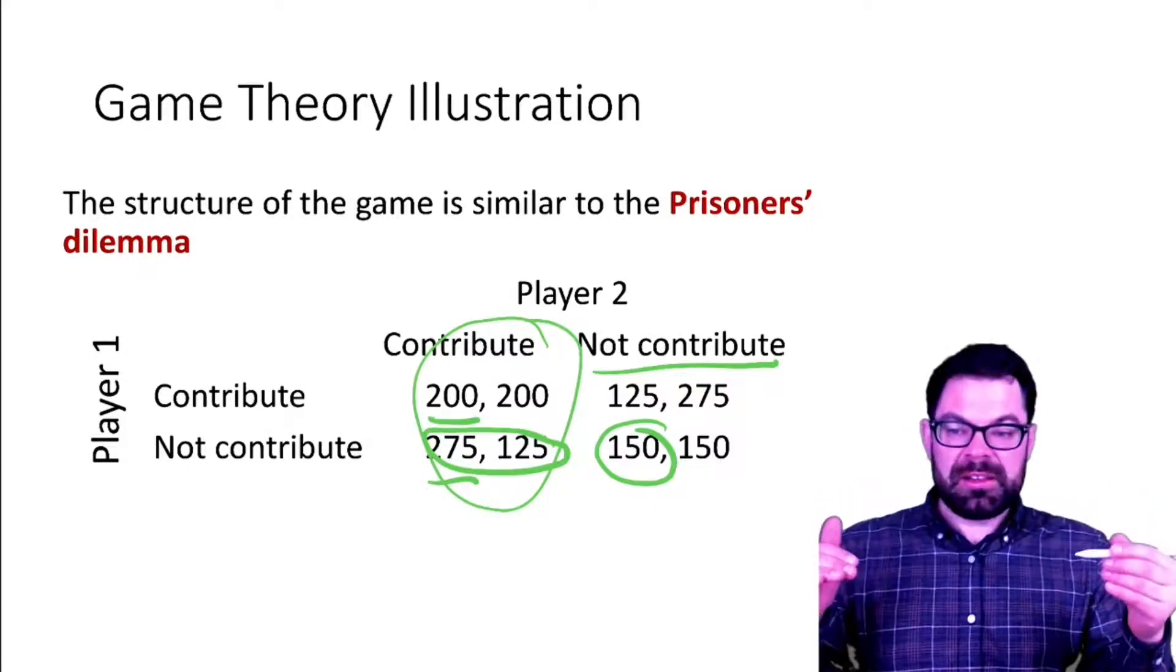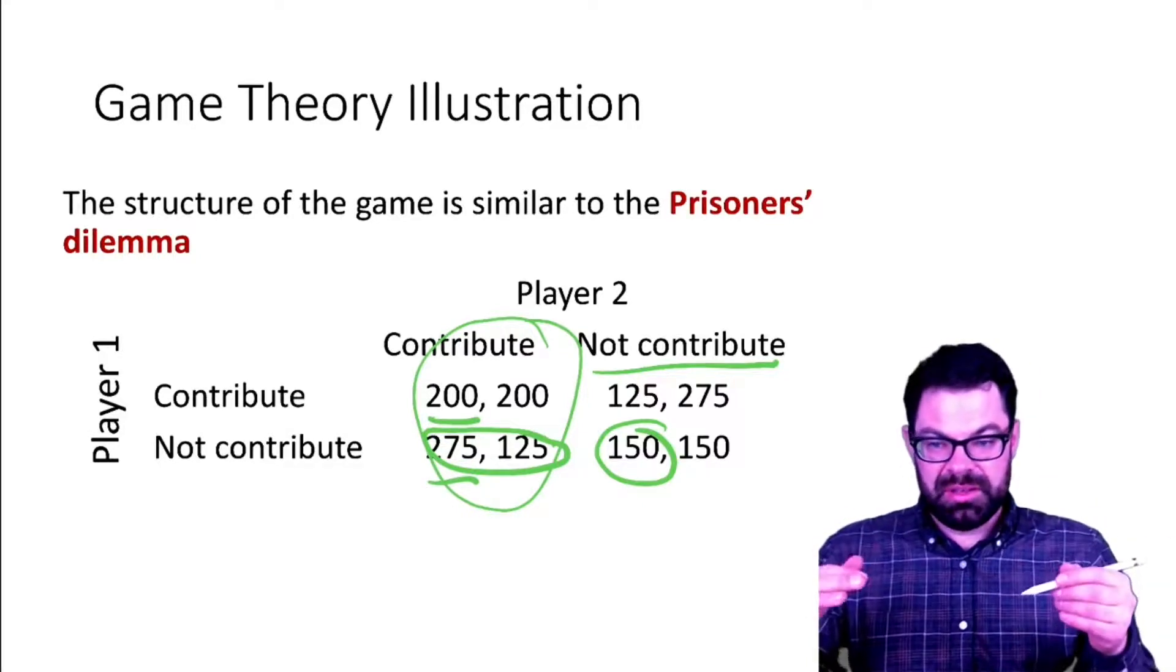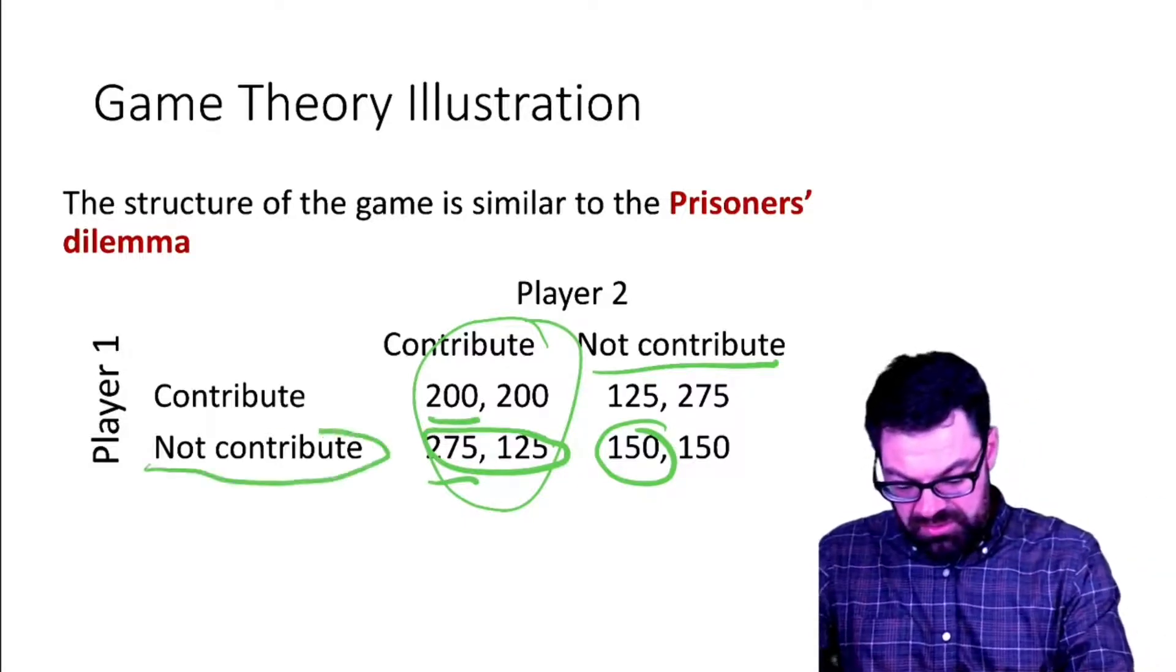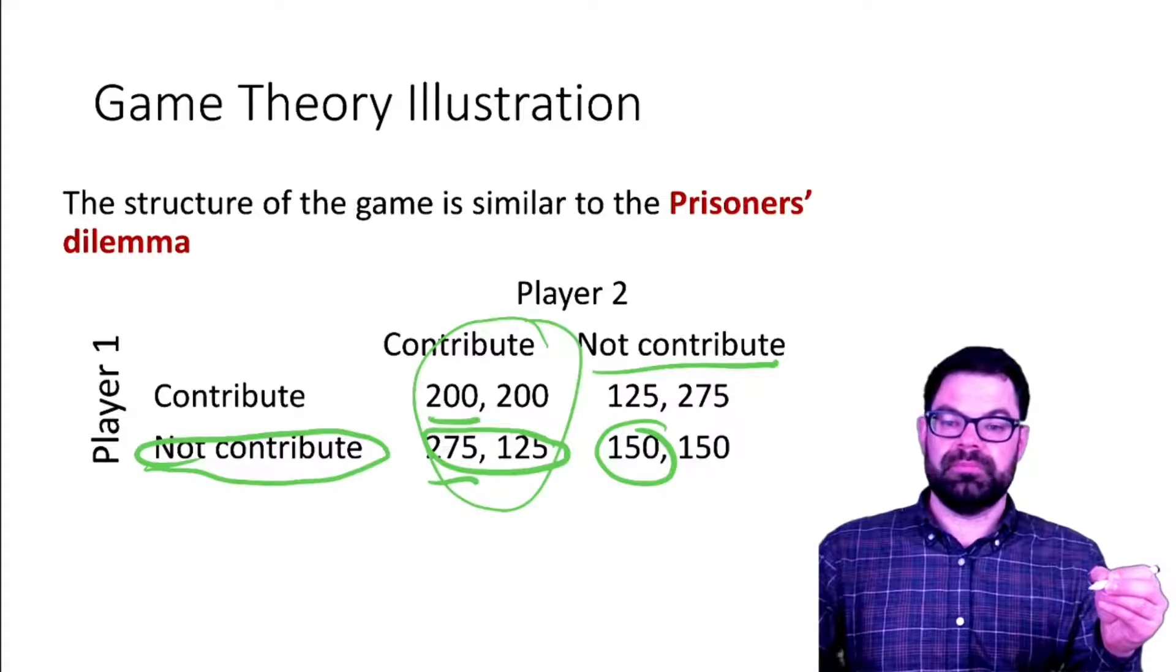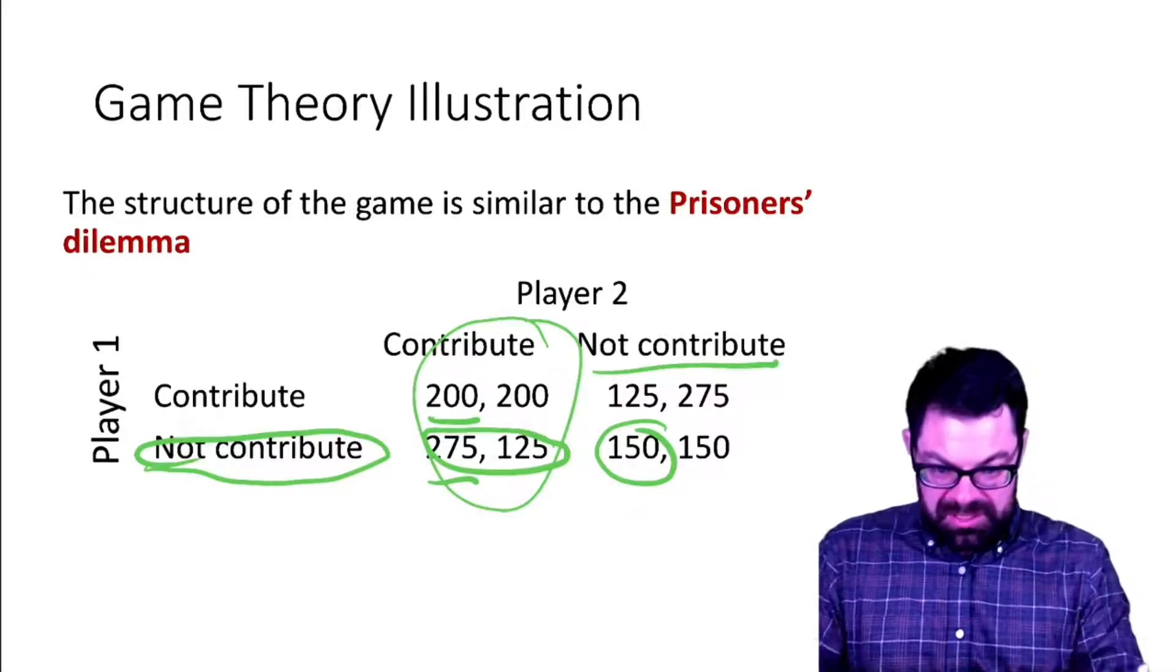From the perspective of player one, that player's best action no matter what player two does is always not to contribute. That's what we call in game theory a dominant strategy.